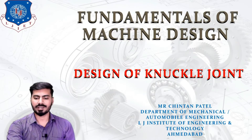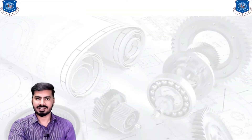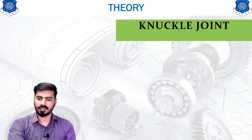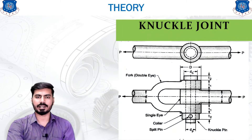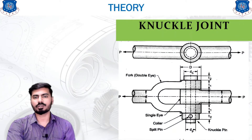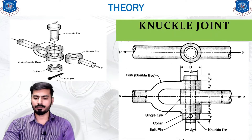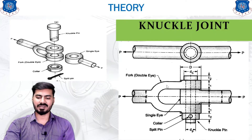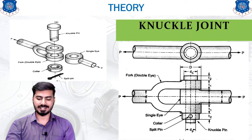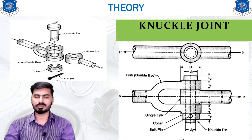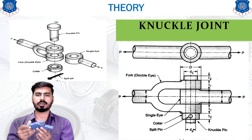We are going to look at the design of this type of joint first. Based on the design we are going to look at the dimensions which we require to calculate. The design of the knuckle joint can be explained by this figure. As you can see there is a top view as well as the front view and the exploded view is represented here. The top view and the front view represent each and every dimension which is required. The diagram itself is explanatory, but we also have a miniature model of the knuckle joint.